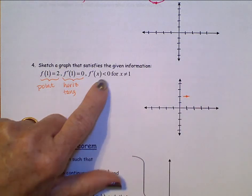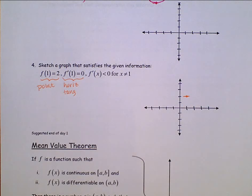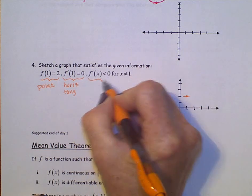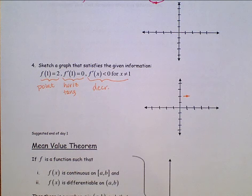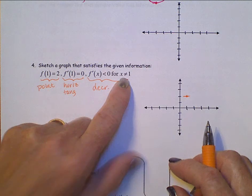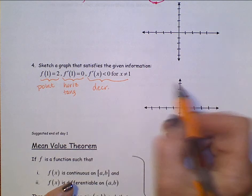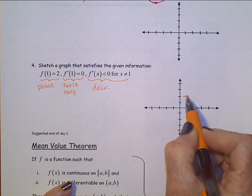And f prime of x is less than zero whenever x is not equal to one. f prime less than zero, that's decreasing. Function is decreasing whenever x is not equal to one, always decreasing. Function has to be decreasing and come into this horizontal tangent here and then continue to decrease.